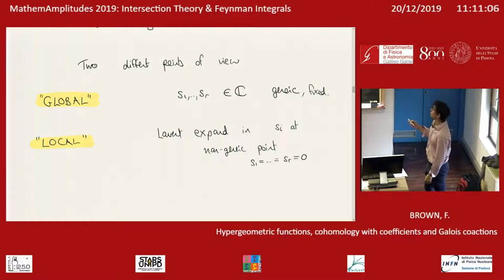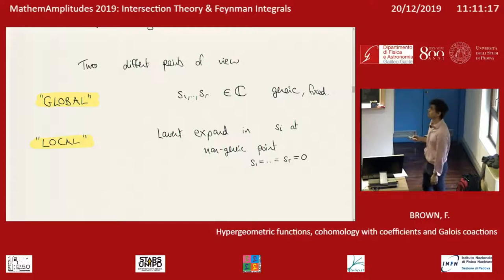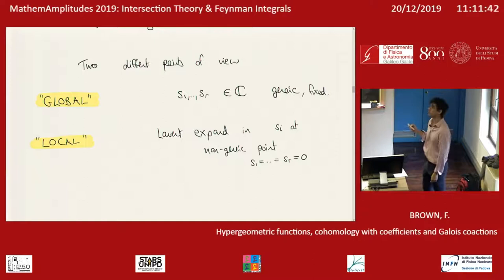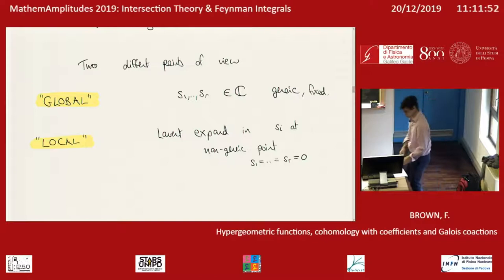There's the global point of view, where these parameters are complex numbers and they have to be generic — typically meaning they're not integers and their linear combinations are not integers, but they're fixed. In the theory of cohomology with coefficients, the s_i are fixed. But in physics and in many other applications, we don't want to do that. We want to do a Taylor expansion or a Laurent expansion in the s_i's. And if they're fixed, you can't do that. Furthermore, you want to do a Laurent expansion precisely at the most non-generic point — precisely the point that you're not allowed to consider in the first setting. I'm going to call this the global point of view and call the other the local point of view. They are chalk and cheese.